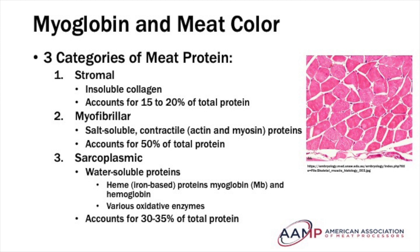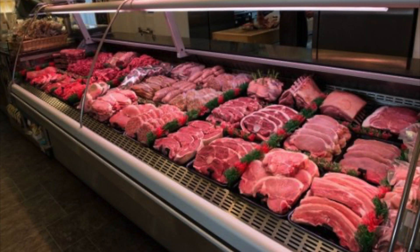Meat protein is categorized into three different classes: stromal, myofibrillar, and sarcoplasmic. For the purpose of this video, we will be focusing on the water-soluble sarcoplasmic proteins. Sarcoplasmic proteins are responsible for providing the color of meat. The main sarcoplasmic protein responsible for meat color is called myoglobin.